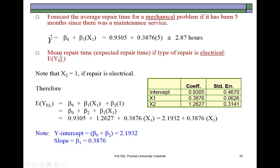Next: what's the mean repair time if the type of repair is electrical? When it's electrical, X2 = 1. Substituting, B2 times 1 is B2, so the regression equation becomes B0 + B2 + B1·X1. Mathematically, it's good to group the constants together: adding B0 and B2 gives 2.1932, and then B1·X1 is 0.3876·X1. This gives a neat expression for the expected repair time of an electrical problem.